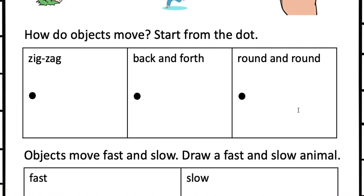Okay we're back. Next part. It says how do objects move? Start from the dot. So we know that objects move in many different ways. We want to see if you can show us how.